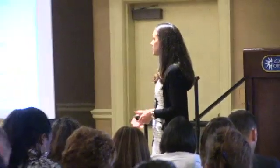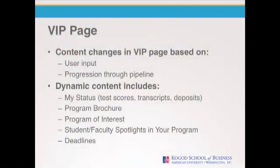Some of the details a student sees in the prospect phase are very different from the information someone sees once they get admitted to a program. In terms of content that changes: 'my status' — if they're in the prospect or application phase, they see information about their submission materials waiting to be confirmed as received by our office, and they have access to a program brochure that changes depending on whether they're looking at an MBA or MS program.